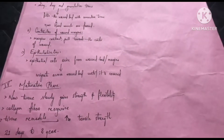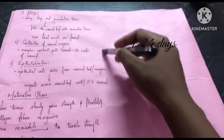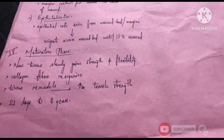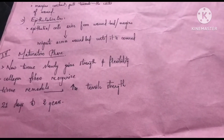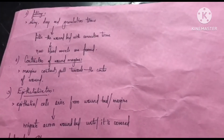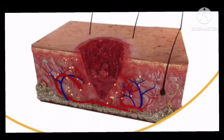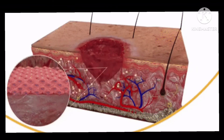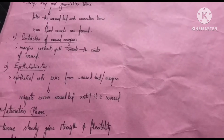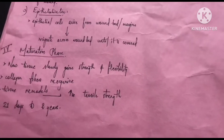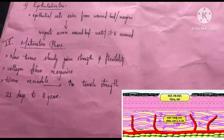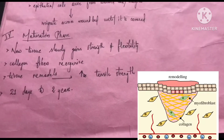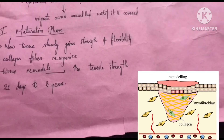The last phase is the maturation phase. During the maturation phase, new tissue slowly gains strength and flexibility. The three processes in the proliferative phase were: connective tissue filling the wound bed, wound contraction from the wound margins toward the center, and epithelialization where epithelial cells cover the wound bed.